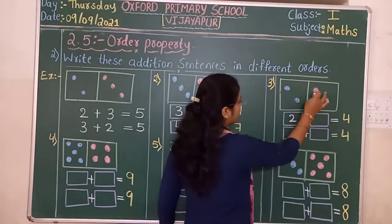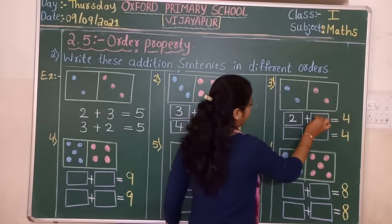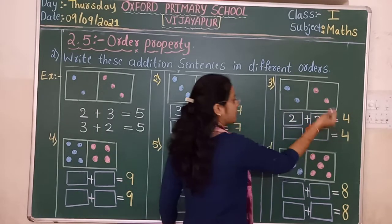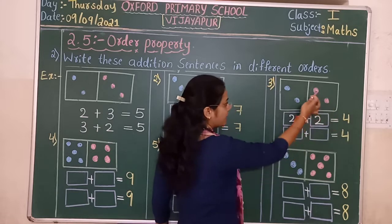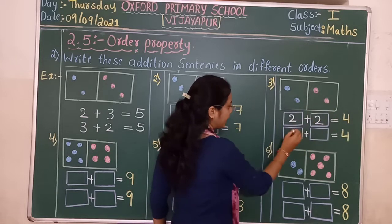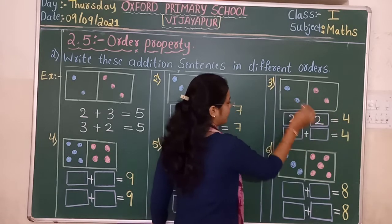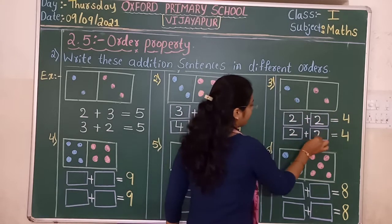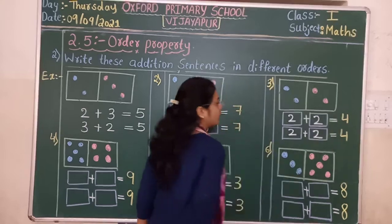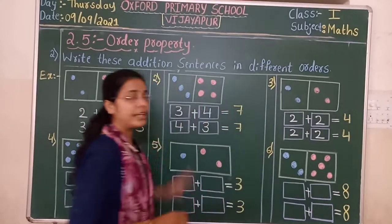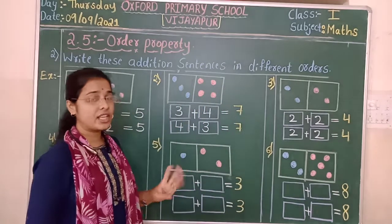Next example: two dots in the first box and two dots in the second box. If you change the order and write the second box first and the first box second, the sum will still be four. There is no change.